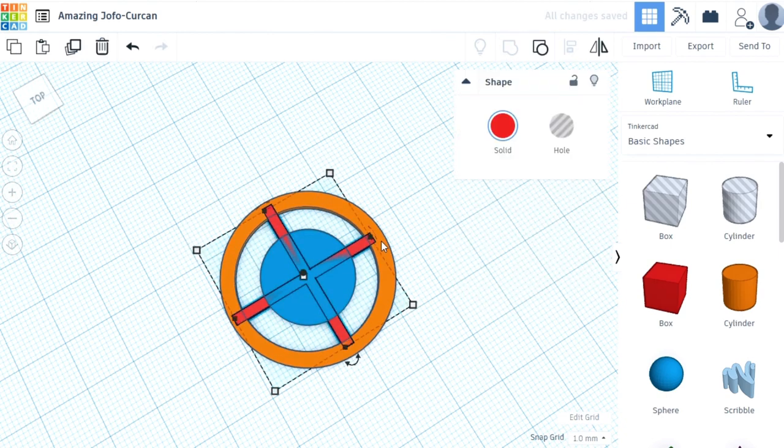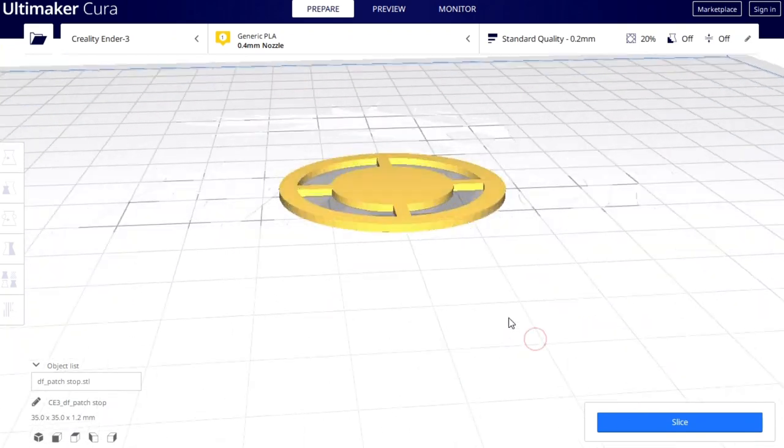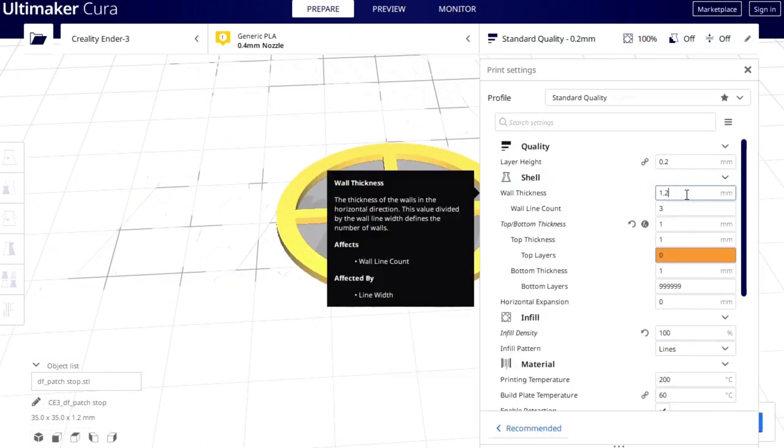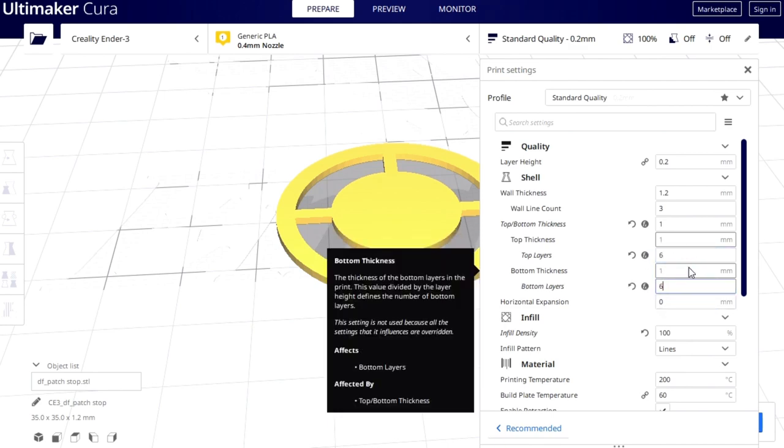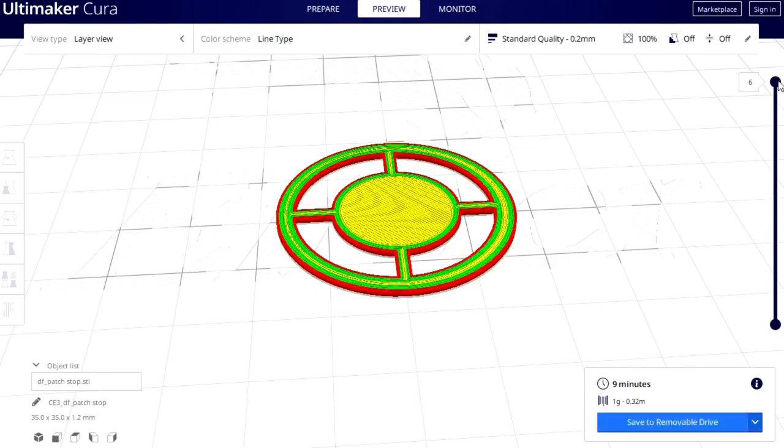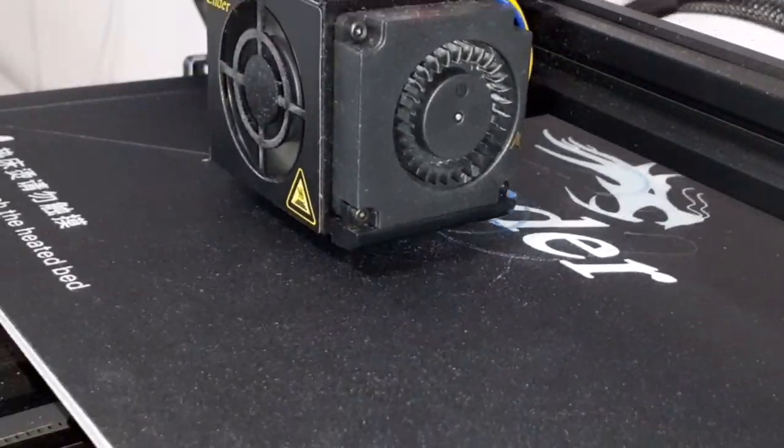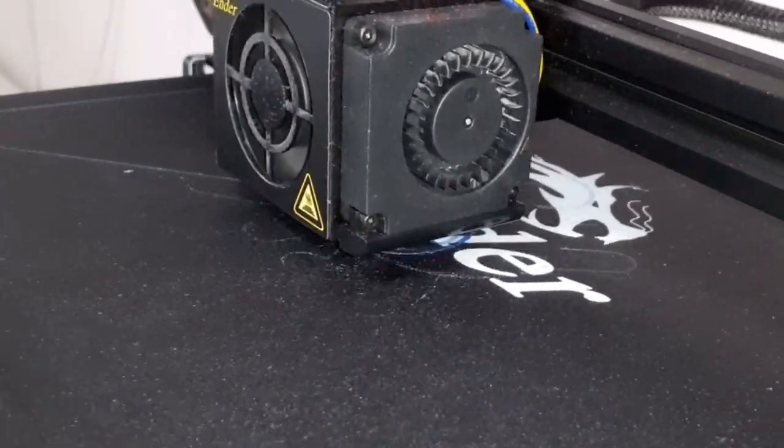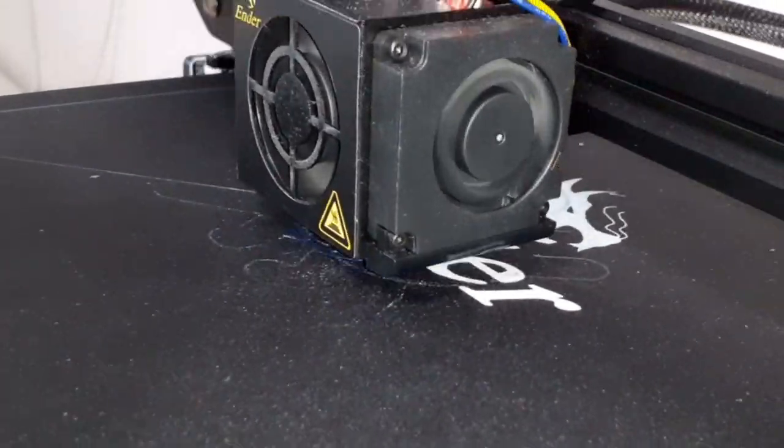And this slicer program then converts the shape, that's the slicer right now, converts the shape into a so-called G-code which is then understood by the 3D printer to be printed. So you see you have to use two different programs here. And I am now printing the whole thing a little bit in time lapse again and after a couple of minutes I had my filter ready.